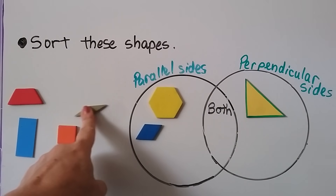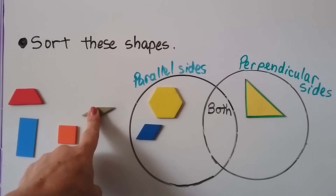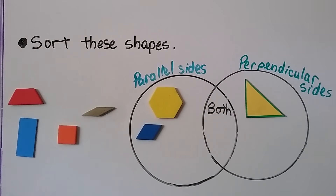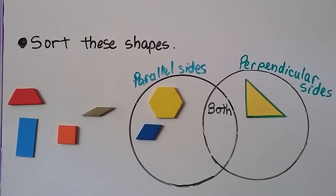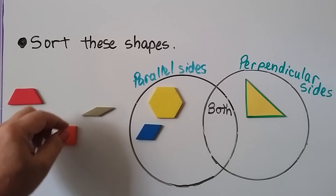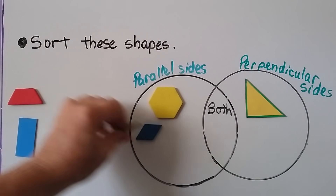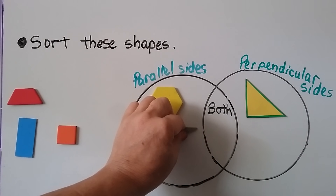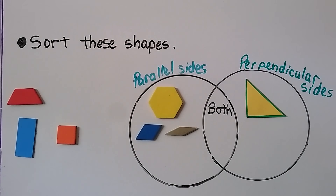Now look at this shape — this quadrilateral. This is actually another rhombus; it's just leaning more, it's got more of a slant. And it doesn't have any perpendicular sides, but these sides are parallel. So it goes here with the blue rhombus.